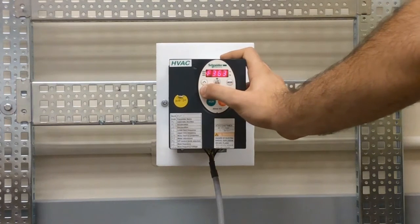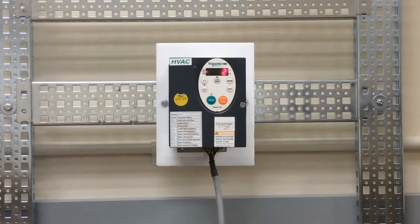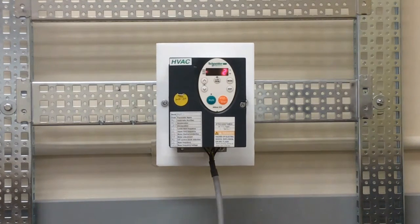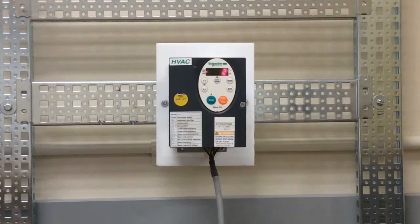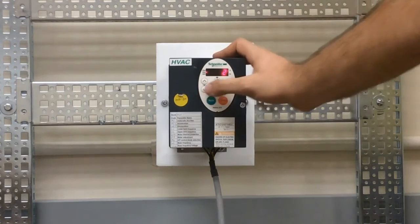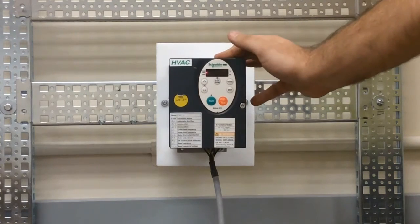Once you're on parameter F360, press enter. For your options here, you have zero, one, and two. Zero indicates that PID is turned off. One enables PID using VIA analog input as a reference, and two enables PID with VIB as a reference. We can set it accordingly. In this case, we can set to one, for example, to use VIA.